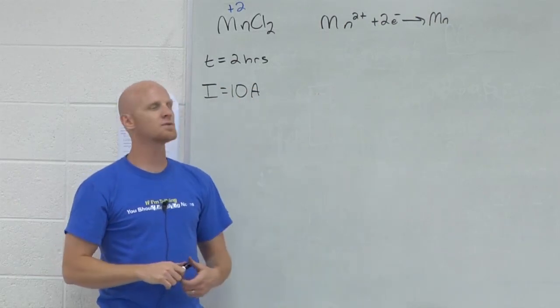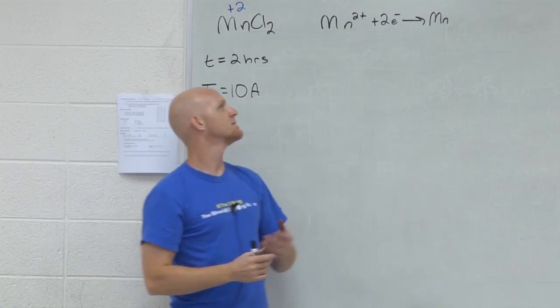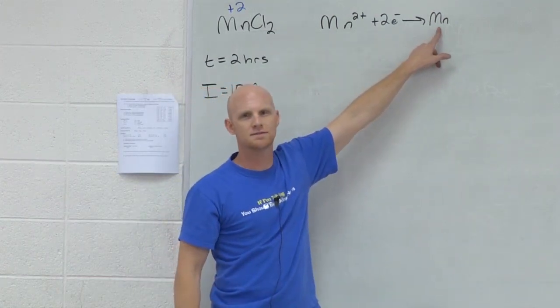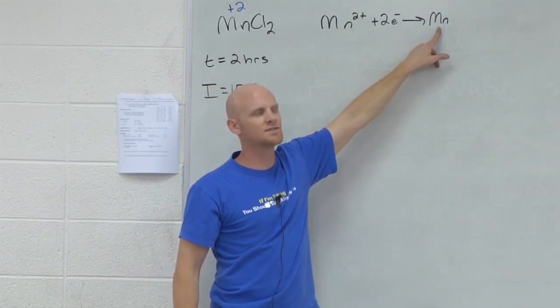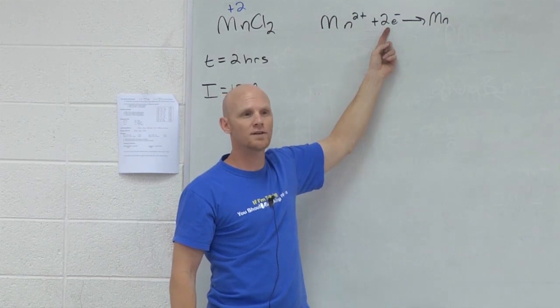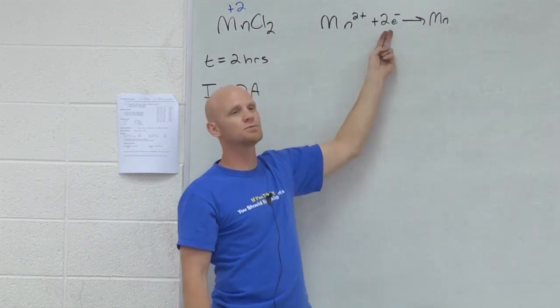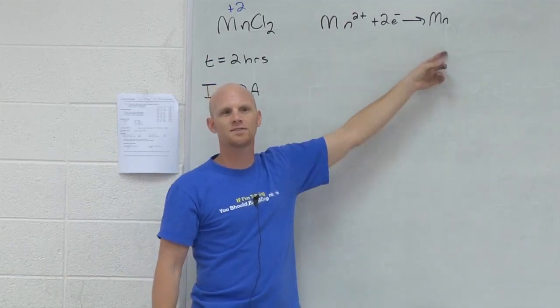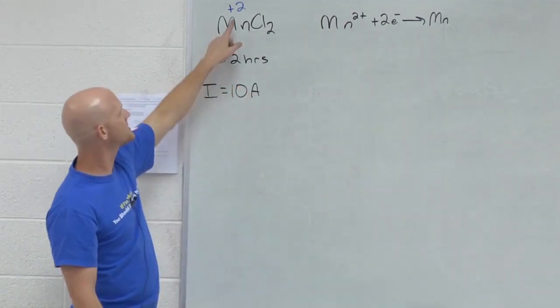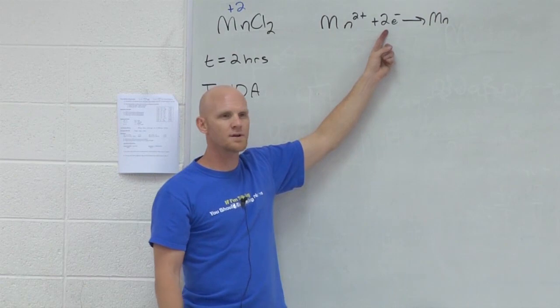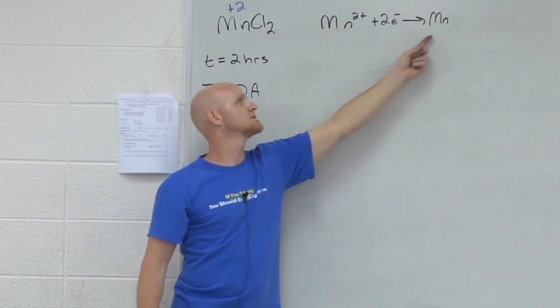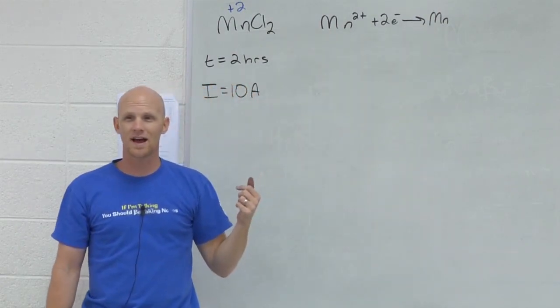So what if I told you I was trying to make five moles of manganese? How many moles of electrons would it take? Ten moles. It's one mole of manganese for every two moles of electrons. That's why I needed this half reaction. If you get the charge on it, it makes it really easy to figure out the moles of electrons needed to form one mole of that substance.